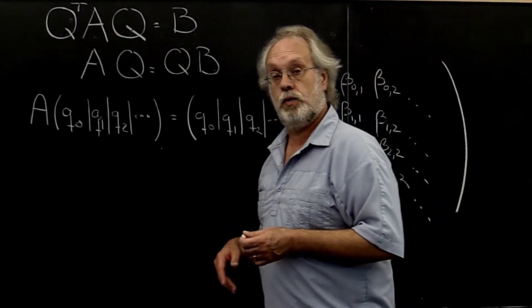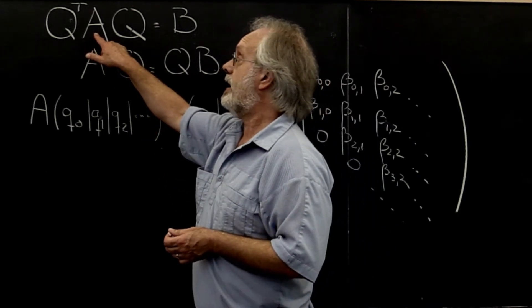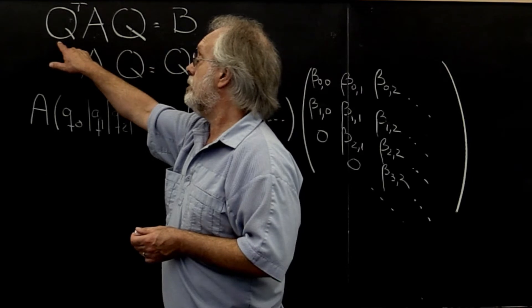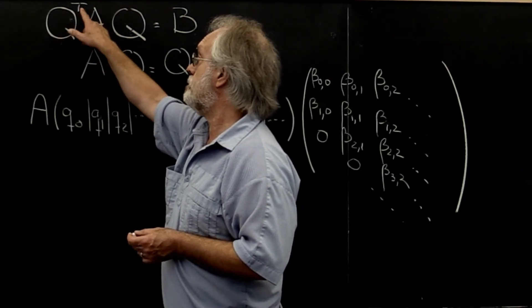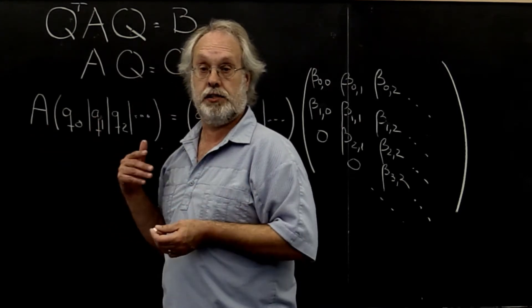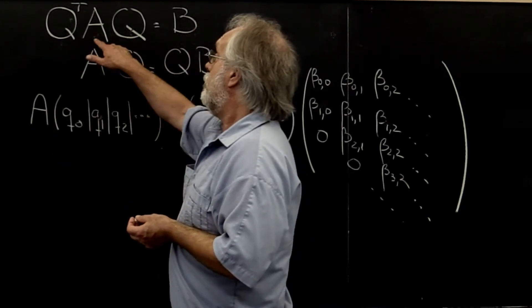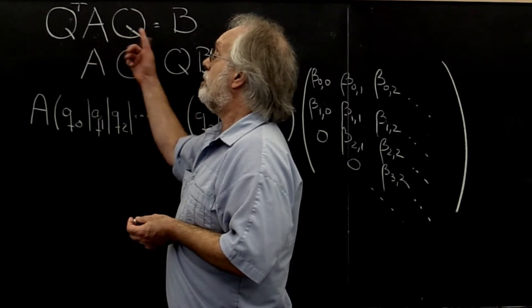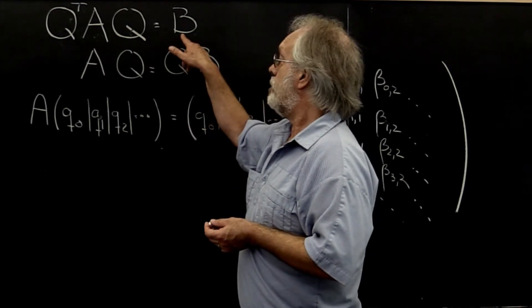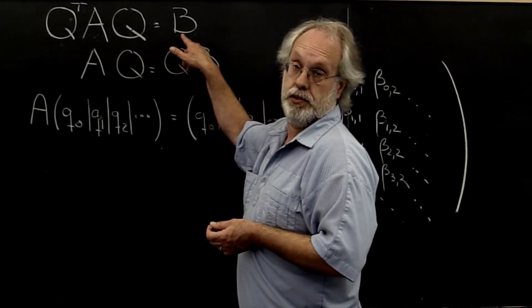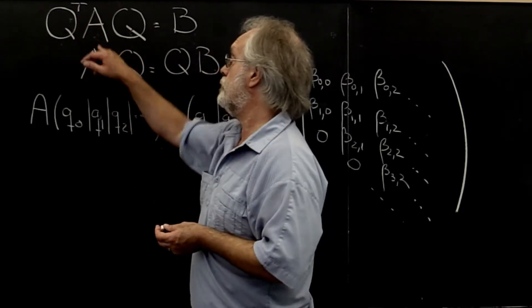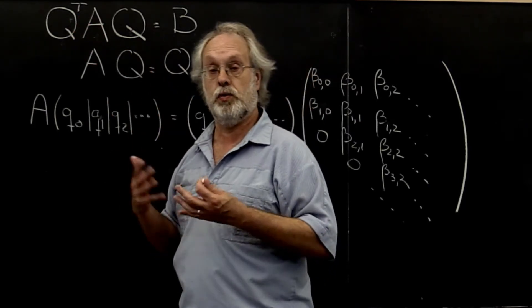What we saw in the last unit was that if we started with a tridiagonal matrix A and we computed some unitary matrix Q such that Q transpose times A was R, an upper triangular matrix, and if we then took that unitary matrix and applied it from the right to that upper triangular matrix, then we ended up again with a tridiagonal matrix. Here we use transpose instead of Hermitian transpose because we knew that our tridiagonal matrix was real valued.